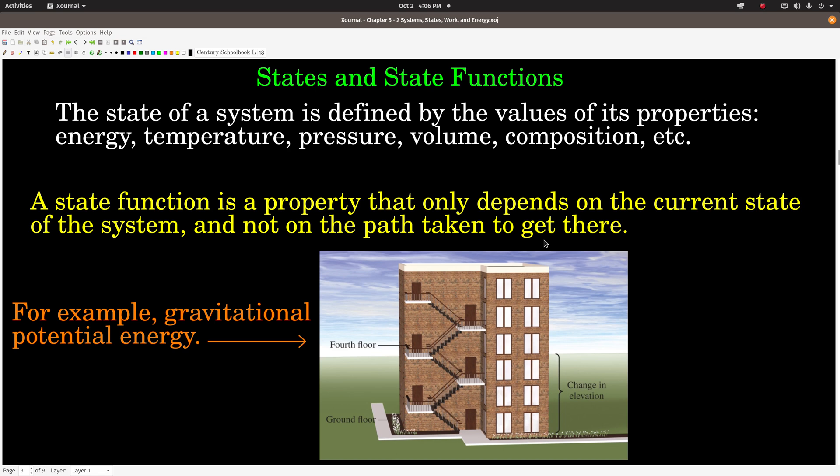An example of a state function would be gravitational potential energy. Let's say we start out, there's this building down here, and we start out on the ground floor, or outside maybe, and we have a certain amount of gravitational potential energy which depends upon basically our distance from the center of the earth. Now if we go up to the fourth floor, we're going to be further from the center of the earth, so we're going to have more gravitational potential energy.